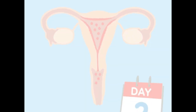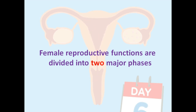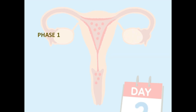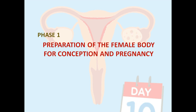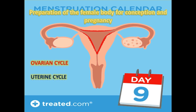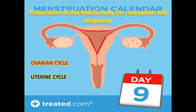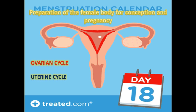The female reproductive system performs many responsibilities and is very complicated, with enormous interrelated ongoing processes. To make it less complicated, let's divide them into two major phases. Phase one is very important, as the female body is preparing itself for conception and pregnancy. In this phase, a cascade of events occurs in the female reproductive tract, which includes the ovarian cycle and the uterine cycle.